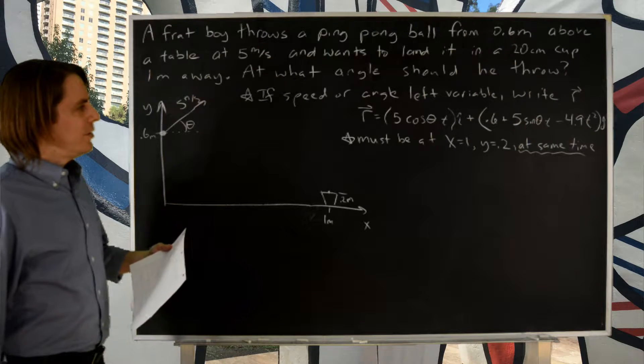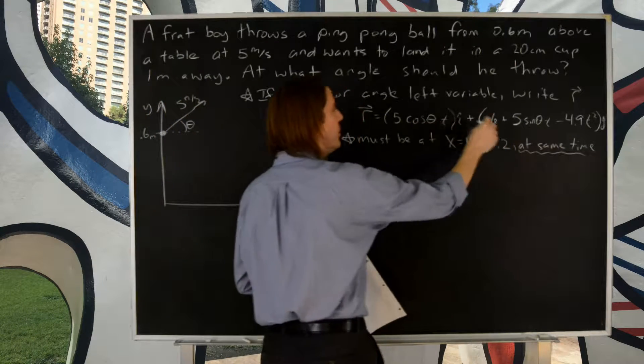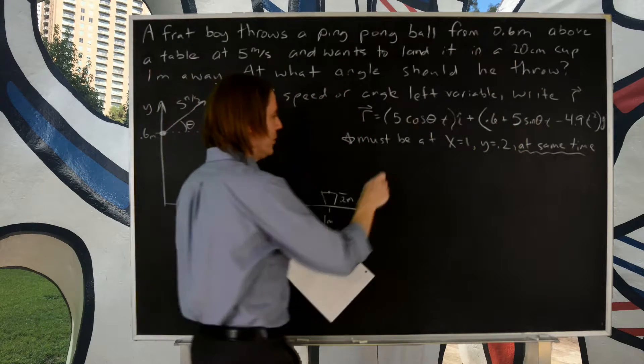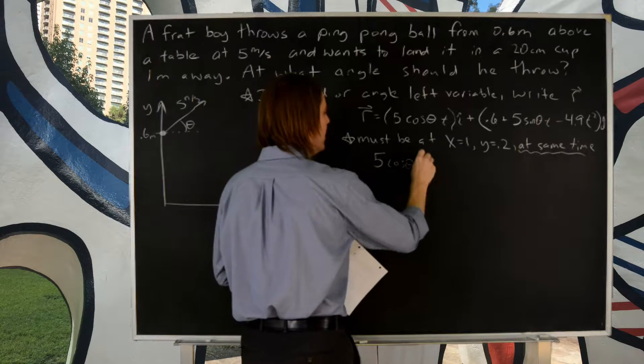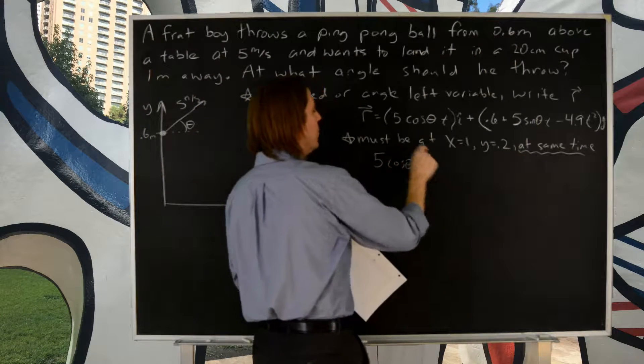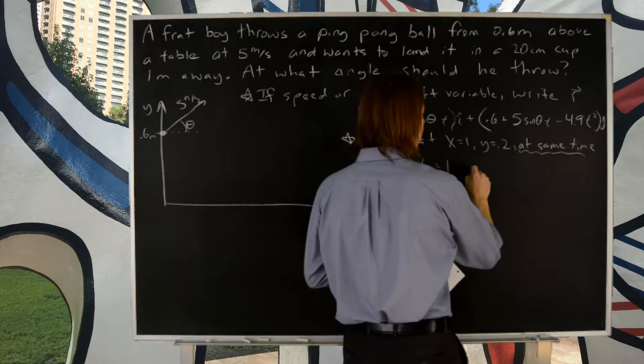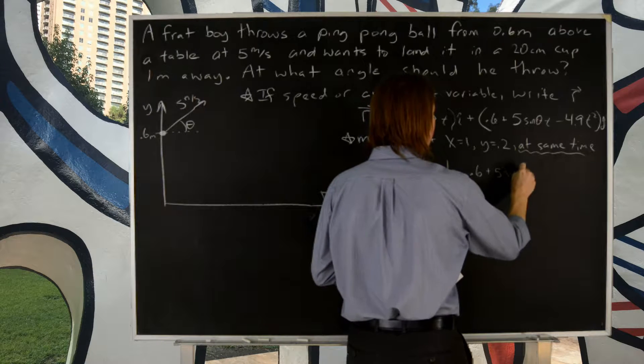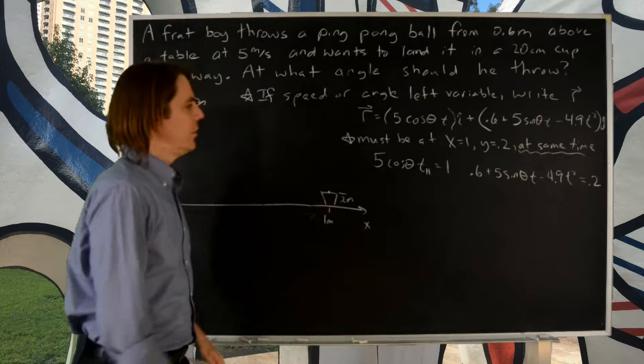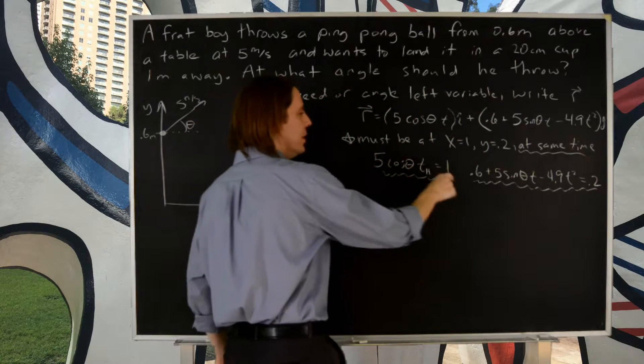So what we really want to figure out is we really have two equations and two unknowns. We don't know theta and we don't know that time, but we have two equations. We know this equals 1 meter and this equals 0.2. So it's really just solving that system of two equations and two unknowns. So let's get started. 5 cosine theta, I'll call it th for the hang time, because it is essentially the hang time. 5 cosine theta hang time equals 1 meter. That's the x position. And then the other one is simply 0.6 plus 5 sine theta t minus 4.9 t squared equals 0.2 meters. So there you go. Two equations, one and two unknowns, theta and the hang time th.